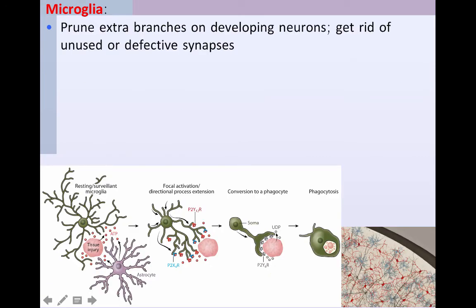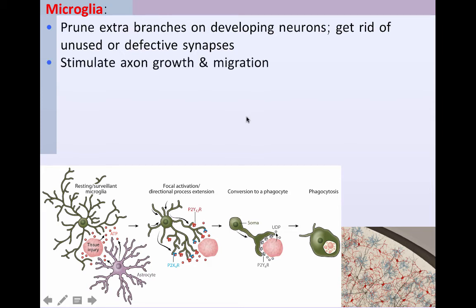Microglia have also been found to release glutamate, which is a neurotransmitter, and they release growth factors that stimulate the growth of cells in the brain. Another important job of microglia is to prune away extra branches on developing neurons — initially neurons have multiple branches, and the ones that don't get used will get pruned away. Microglia also stimulate the growth of axons and cell migration within the nervous system, as cells are not static but can move around.